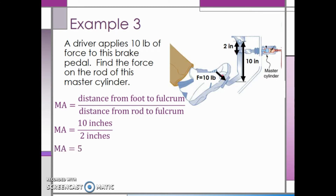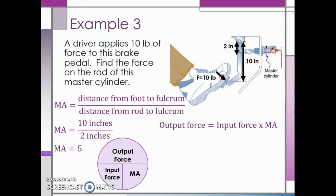Now, we can look at an equation circle from unit 5 where we have output force on top and input force and mechanical advantage both on the bottom. Covering up output force, we are left with input force multiplied by mechanical advantage. The input force is 10 pounds, and the mechanical advantage is 5. Multiplying, we see the output force on the rod of the master cylinder is 50 pounds.